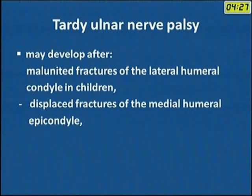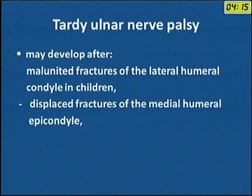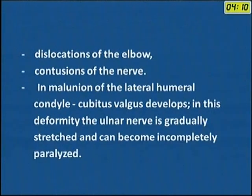Tardy ulnar palsy develops later, where the patient has a malunited supracondyle fracture or fracture of the lateral epicondyle that has gone for non-union. The medial side goes on growing, the patient develops cubitus valgus, and a late ulnar nerve palsy results. It can also occur in dislocation of the elbow joint and contusion of the nerve.